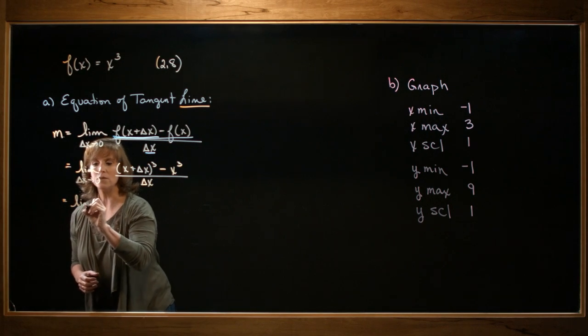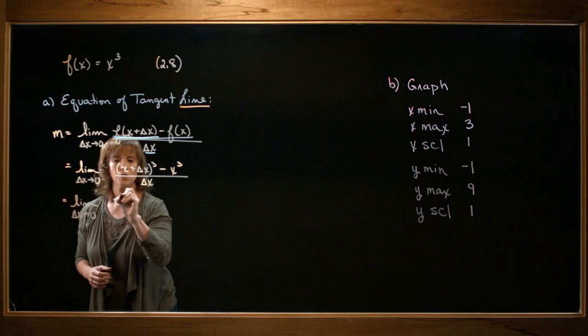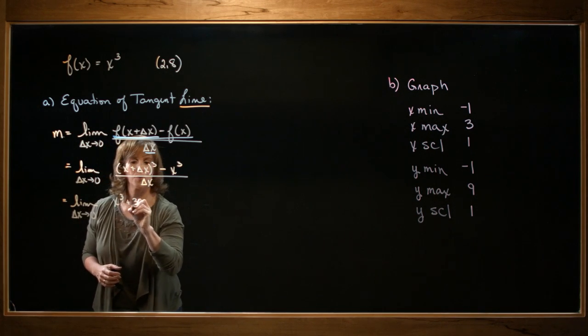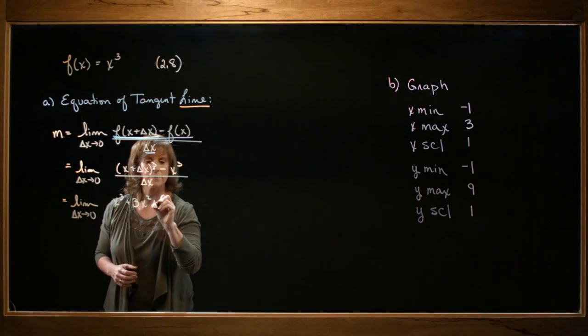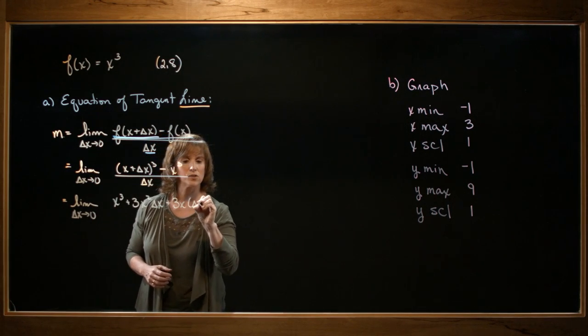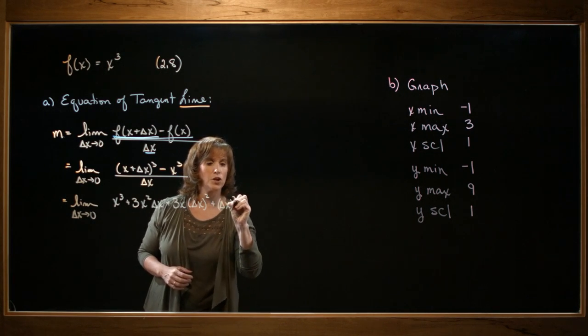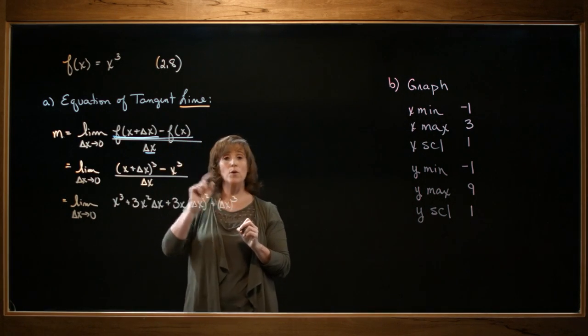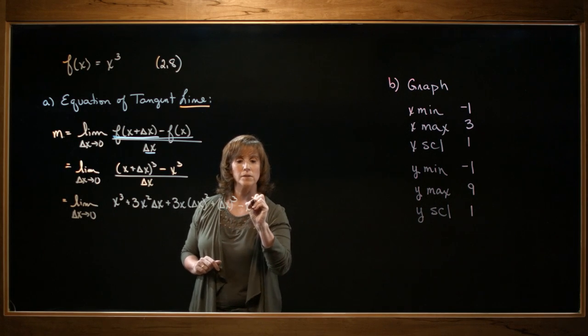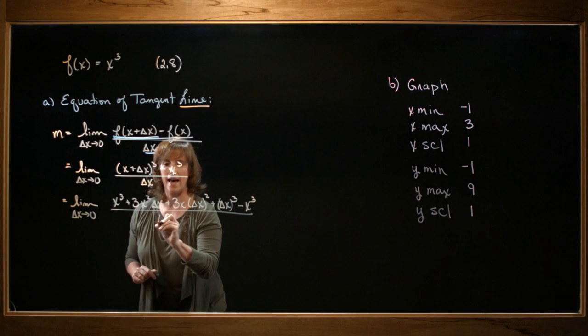So if I do that, the result is going to be x cubed plus 3x squared delta x plus 3x delta x squared plus delta x cubed. I'm then going to subtract my x cubed and divide the whole thing by delta x.